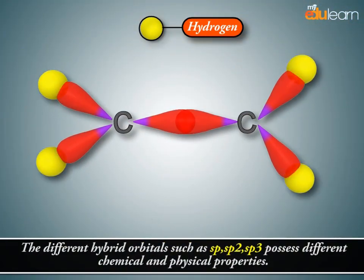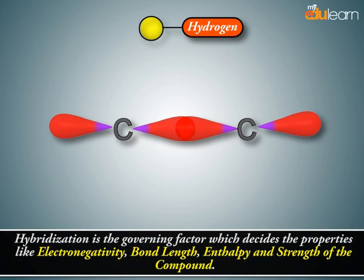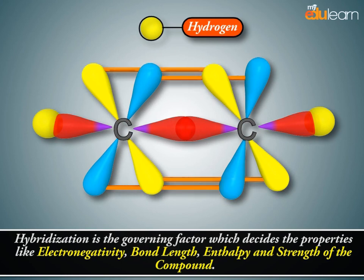The different hybrid orbitals, such as sp, sp2, and sp3, possess different chemical and physical properties. Hybridization is the governing factor which decides properties like electronegativity, bond length, enthalpy, and strength of the compound.